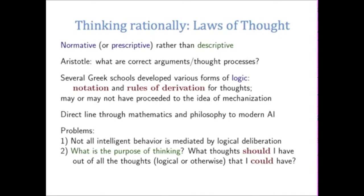Why do we call the rules modus ponens and modus tollens? Because these are the forms of syllogism that come down to us from the classical world. These philosophers probably didn't get to the idea of mechanization of these processes, but because they're fundamentally symbolic, they lend themselves to symbol-manipulating machines — in other words, computers. So there really is a direct line through mathematics and philosophy to modern artificial intelligence.